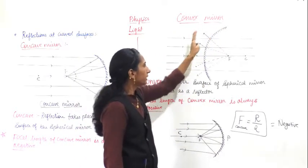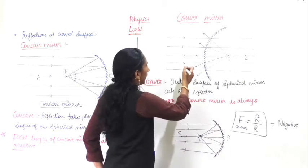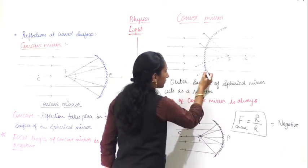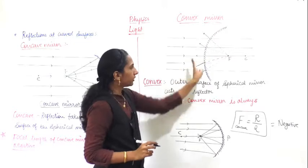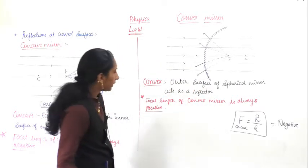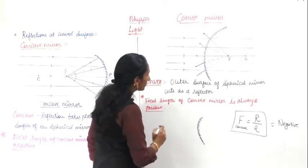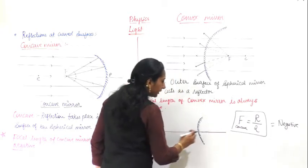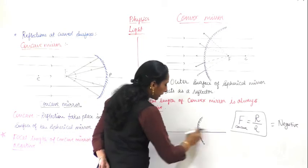Now we will go to the convex mirror, which is opposite to the concave mirror. The outer surface is the reflecting surface and the inner surface is coated. Light rays fall on the outer surface and reflect back. I will draw this separately so you can clearly understand. Here is the convex mirror with the inner part coated. I am also drawing the principal axis - the line which passes through the center of the convex mirror or any spherical mirror - which is called the principal axis.